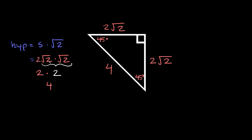In case you're wondering how those root 2's multiply together — think of perfect squares to make it easier. For example, the square root of 9 times the square root of 9 equals just 9, because the square root of 9 is 3, and 3 times 3 is 9. That's why square root of 2 times square root of 2 is equal to simply 2.